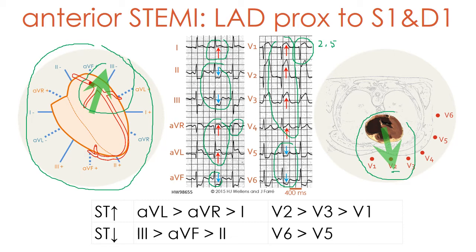Additional hallmarks include an ST segment depression in all three inferior leads — 2, 3, and AVF — and at least in V6, but frequently, as in our example, in both V5 and V6.